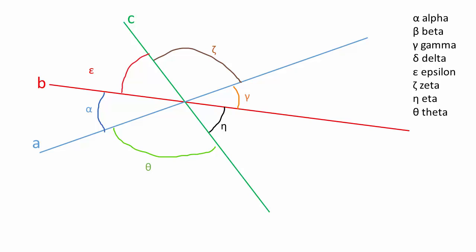Let's name the angles. We have six, so we'll call them alpha, epsilon, zeta, gamma, eta, and theta.